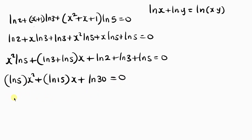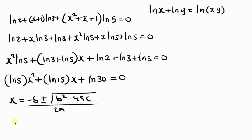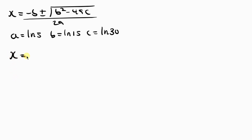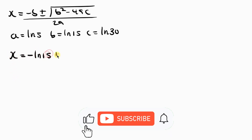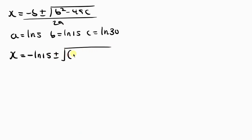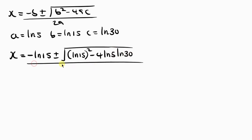We solve this using the quadratic formula: x = (−b ± √(b²−4ac)) / 2a, where a = ln 5, b = ln 15, and c = ln 30. Substituting: x = (−ln 15 ± √(ln²15 − 4·ln 5·ln 30)) / (2·ln 5).